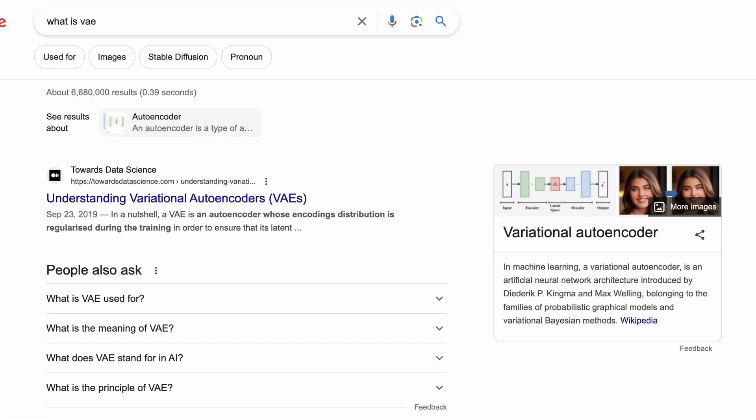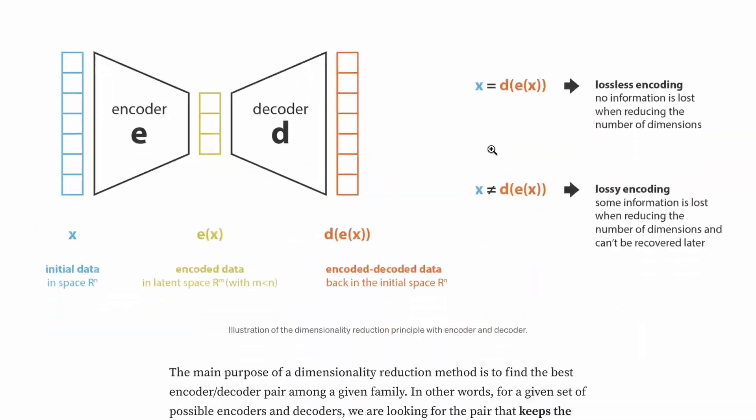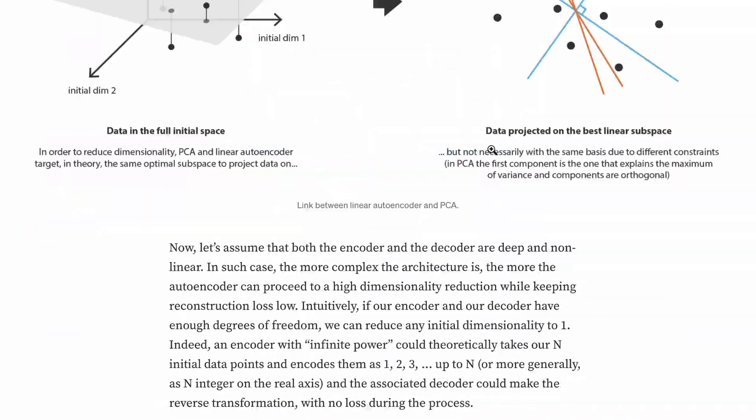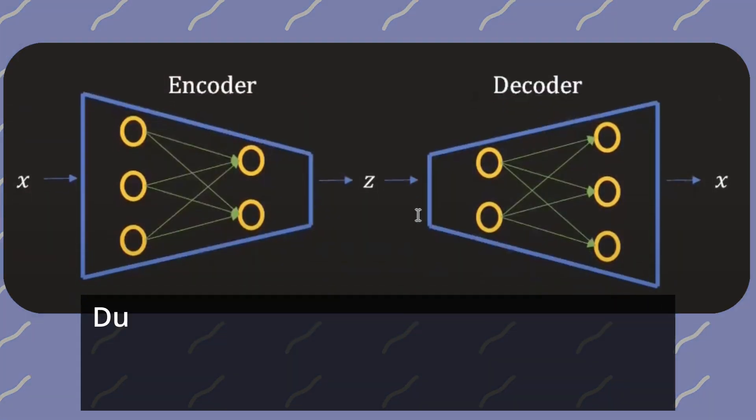Partially, this problem can be solved with a VAE — Variational Autoencoder. If you search what VAE is on Google, you will understand that you don't understand anything. If we simplify it, VAE is a model that learns to generate new data based on the data it has seen during training. VAE consists of two components: encoding and decoding.